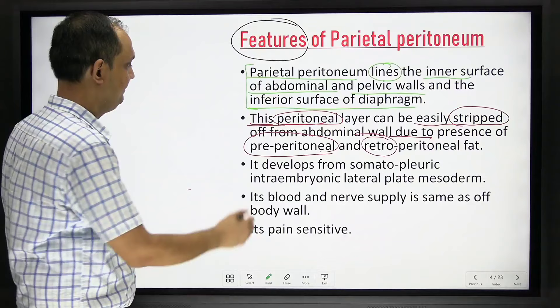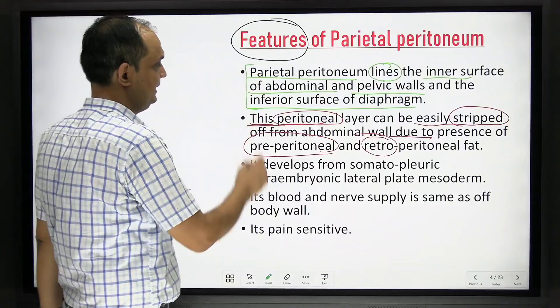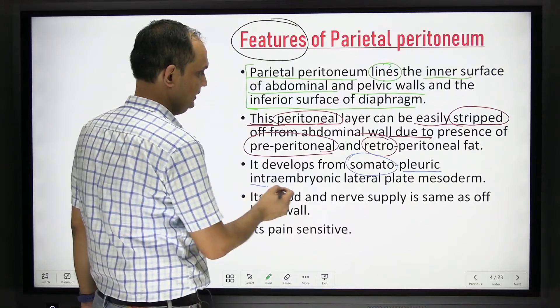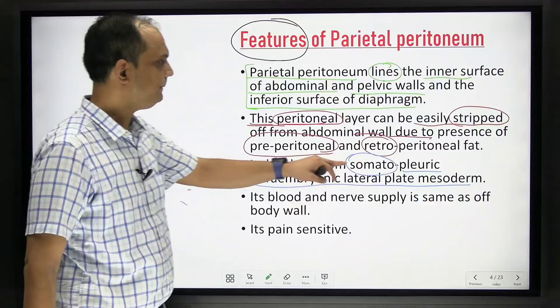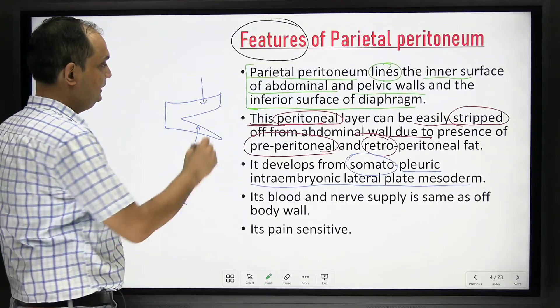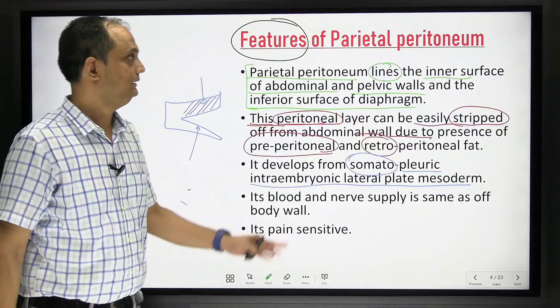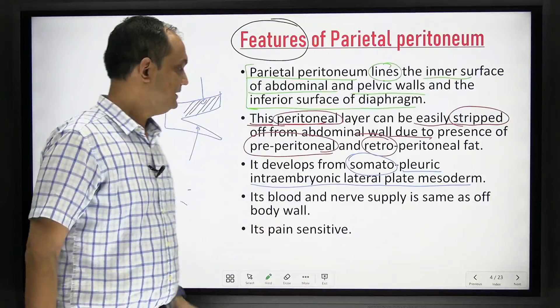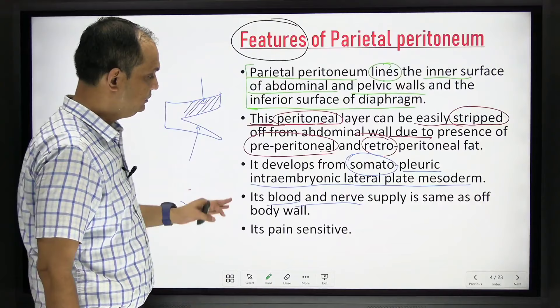Regarding the development of parietal peritoneum: it develops from the somatopleuric intra-embryonic lateral plate mesoderm. The lateral plate mesoderm is divided into two parts — somatopleuric and splanchnopleuric. The somatopleuric mesoderm forms the parietal pleura and parietal peritoneum. Because of this origin, its nerve supply and blood supply are the same as the body wall.